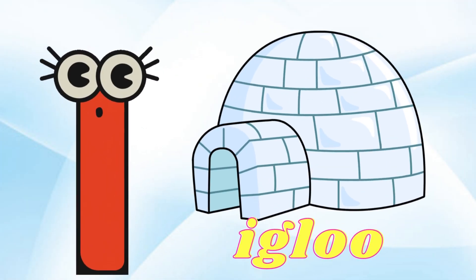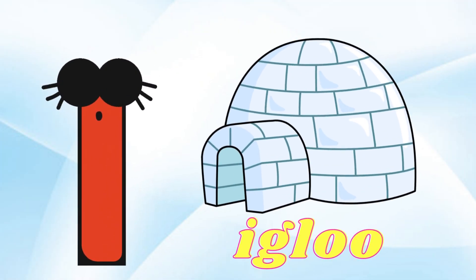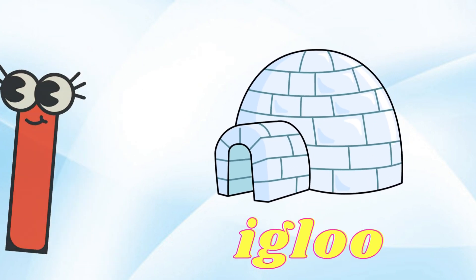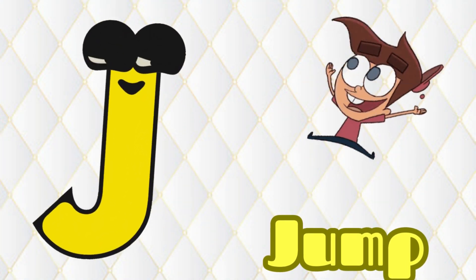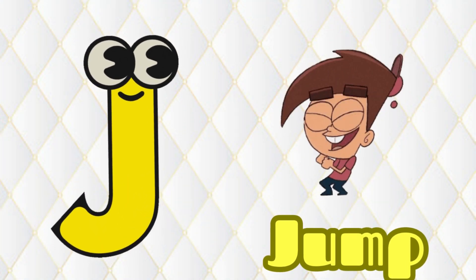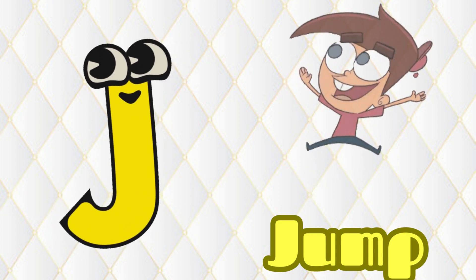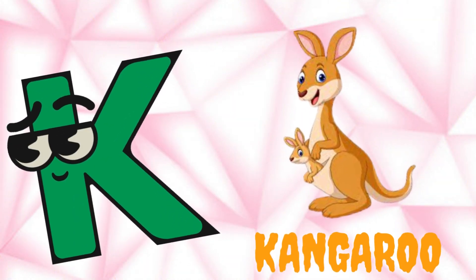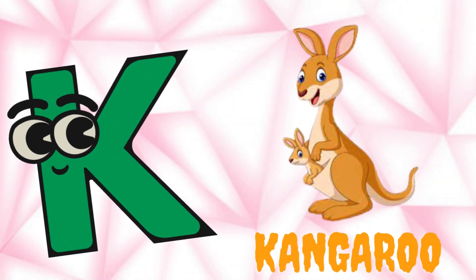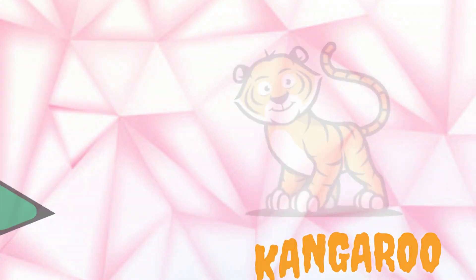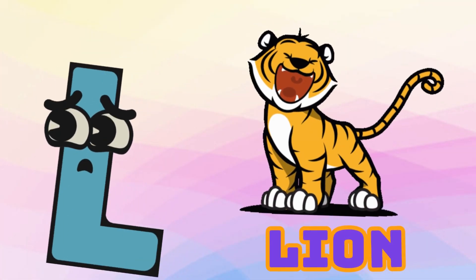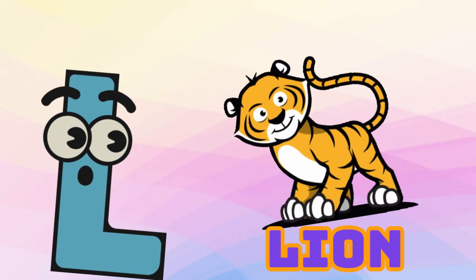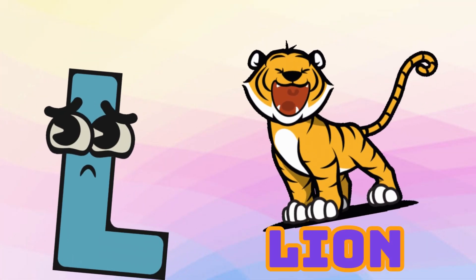I is for Igloo, I-I-Igloo. J is for Jump, J-J-Jump. K is for Kangaroo, K-K-Kangaroo. L is for Lion, L-L-Lion.